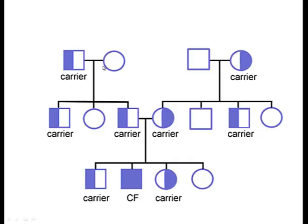Circles represent females and squares represent males in the pedigree. When a female carrier gets together with a male carrier, what's depicted below represents probability — remember, Punnett squares are not guarantees, they simply tell us probability. There's a 25% chance of having a completely normal individual, a 50% chance of having a carrier, and a 25% chance of having an individual with cystic fibrosis.